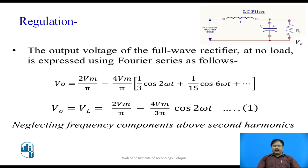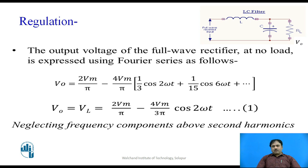The output voltage of the rectifier circuit without any load is defined by the Fourier series. In that we have a number of components — the 2Vm/π component has no frequency component so it is called the DC component, whereas the terms in the bracket carry frequency terms in terms of ω, so these are AC terms. Normally, the harmonics above the second harmonic do not contribute much to the output and decay very rapidly, so the output of this rectifier circuit is limited up to the second harmonic.